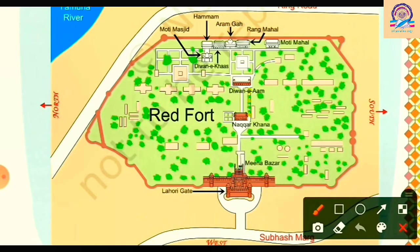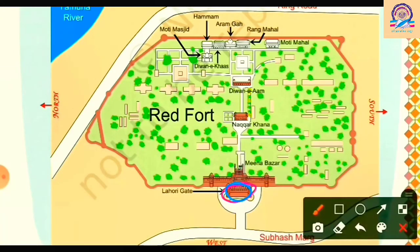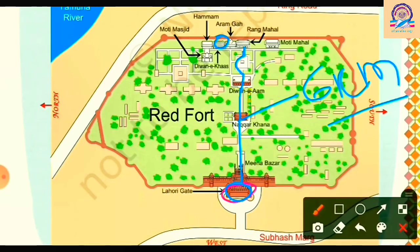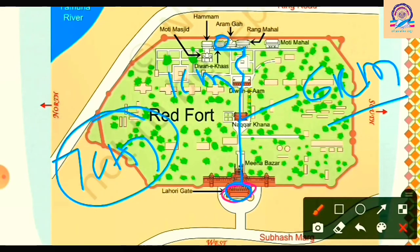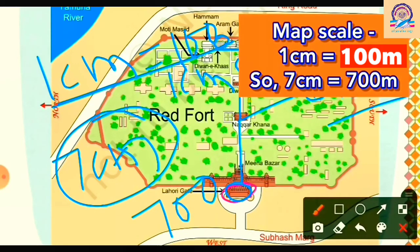The last question: about how far is Lahori Gate from Diwane Khaas? We locate Lahori Gate at the bottom of the map and Diwane Khaas at the top. Measuring from Lahori Gate to Rang Mahal is around 6 cm, and from Rang Mahal to Diwane Khaas is about 1 cm, giving a total of 7 cm. Since 1 cm equals 100 metres, 7 cm equals 700 metres.